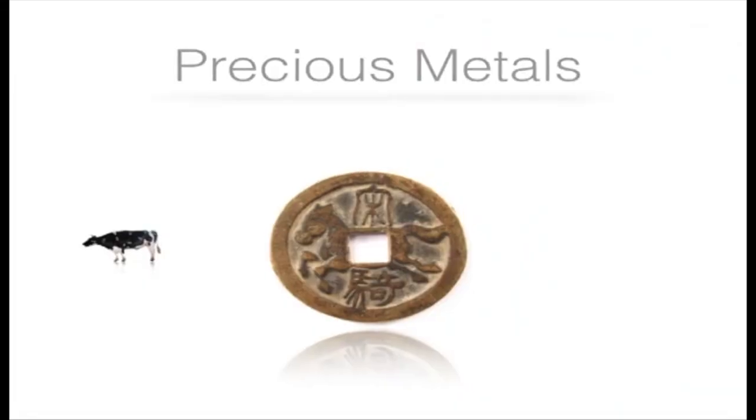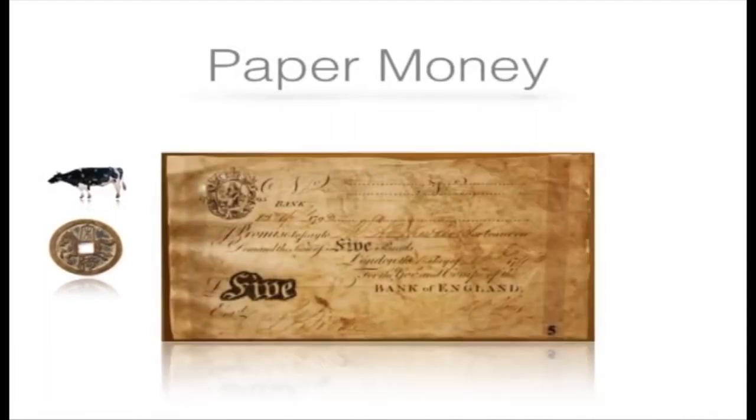Then just 1,000 years back, paper money was born. This happened when people who had gold started depositing their precious metal with goldsmiths, mainly to prevent theft at home. The goldsmiths became bankers and started issuing paper receipts as proof of deposit — and that's how the currency note was born. Over time, rather than physically exchanging gold, people started exchanging these paper receipts because they found it far more convenient.